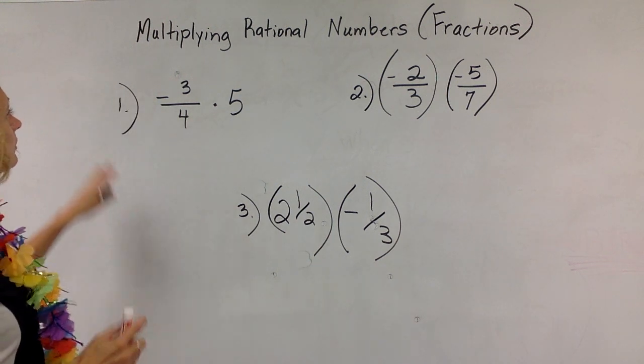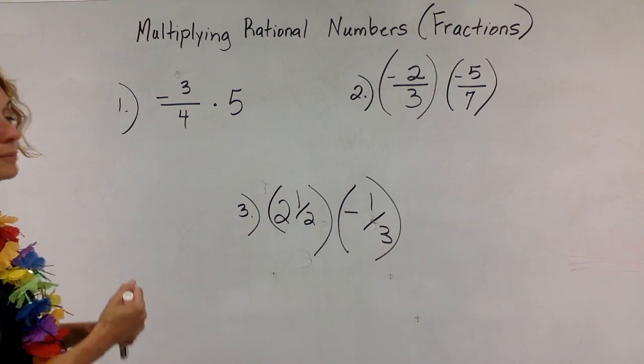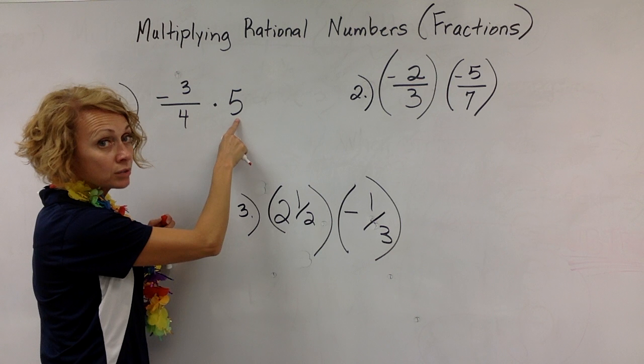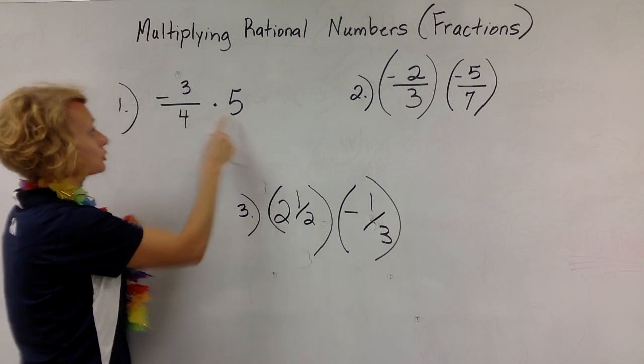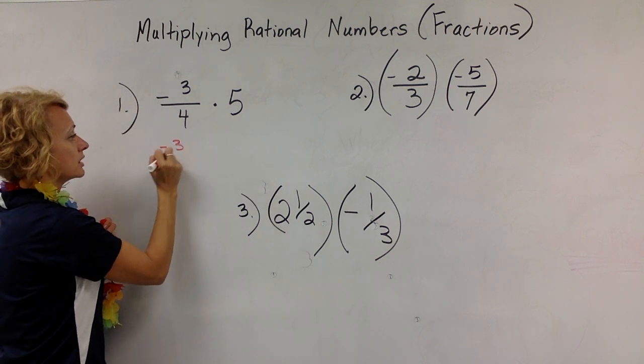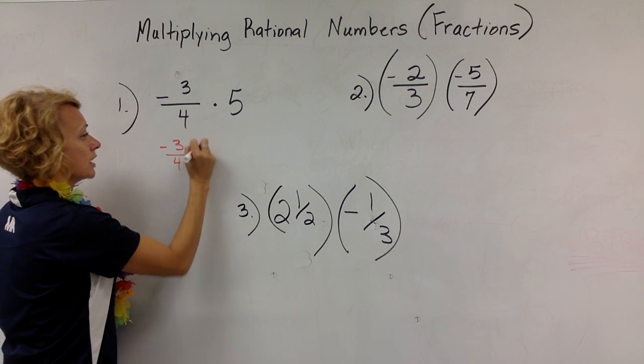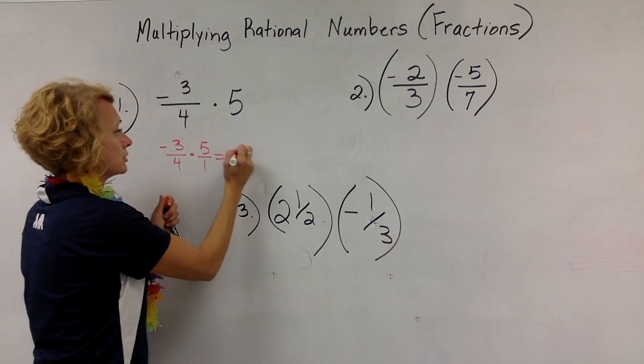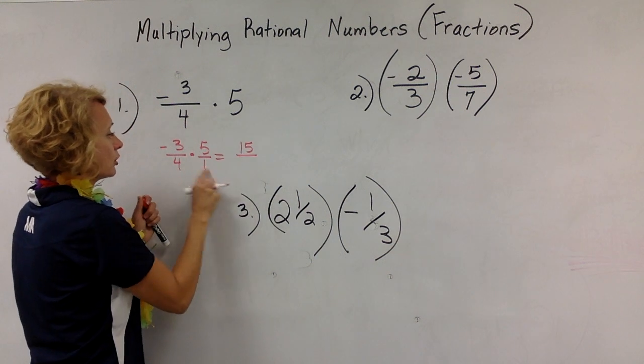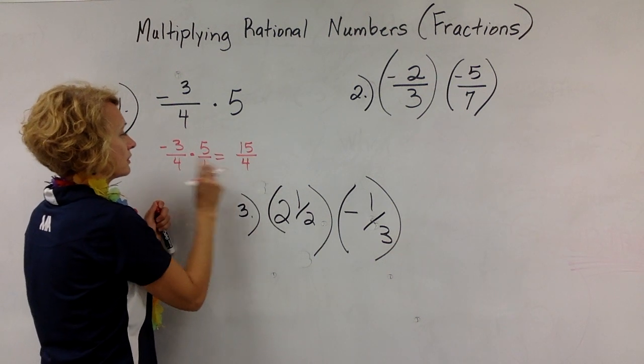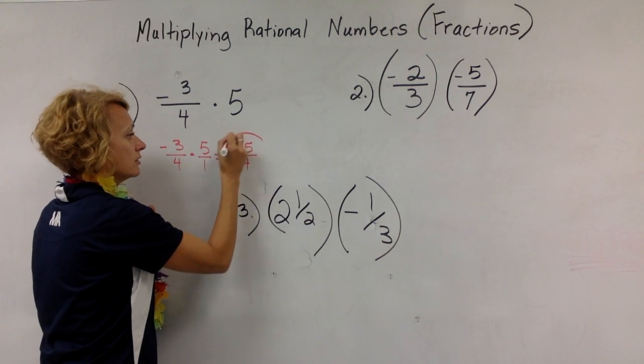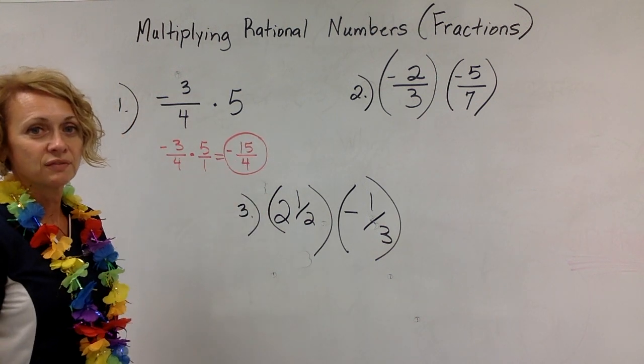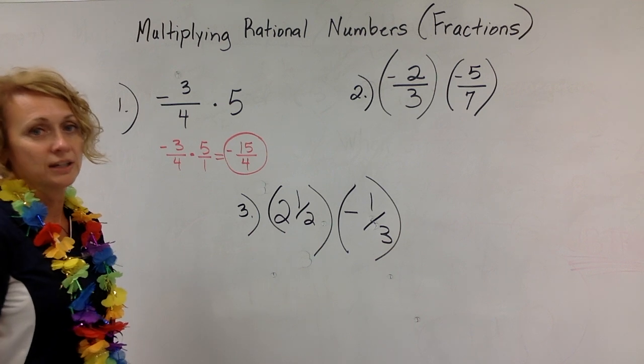On this first problem I see that I've got negative 3 fourths times 5, and I'm always going to change my whole number to a fraction so I can multiply straight across. That's going to give me negative 3 fourths times 5 over 1. I'm going to multiply the numerators, that gives me 15. I'm going to multiply the denominators, that gives me 4. A negative times a positive is a negative, so my answer is negative 15 fourths, and I can leave it as an improper fraction.